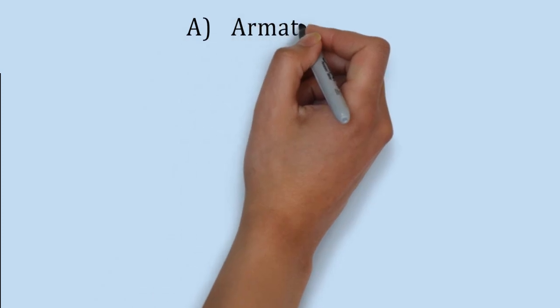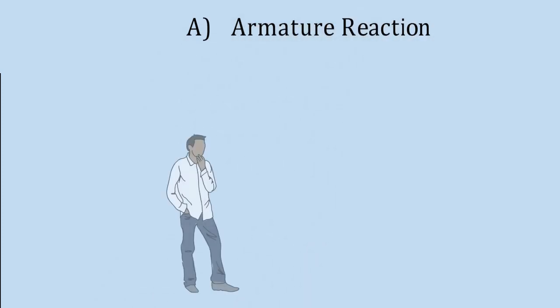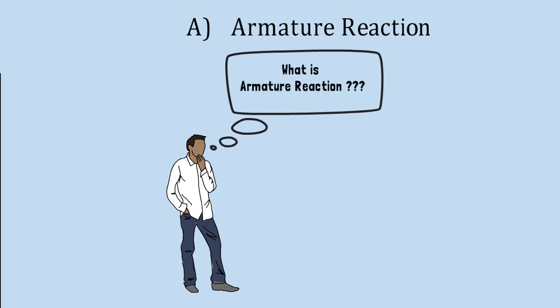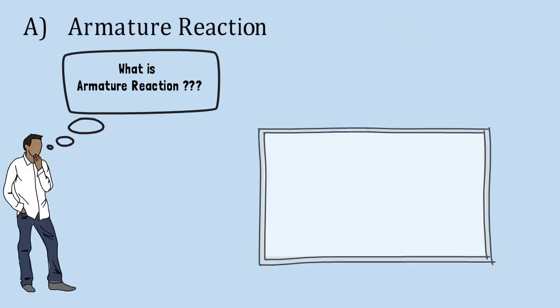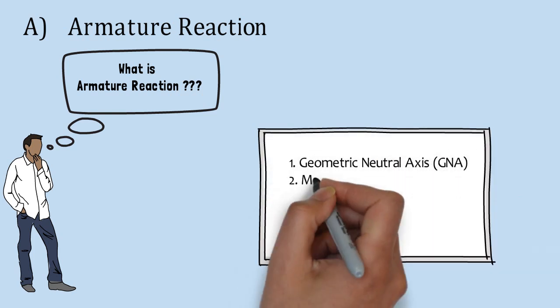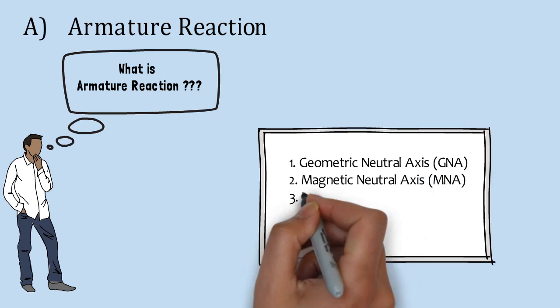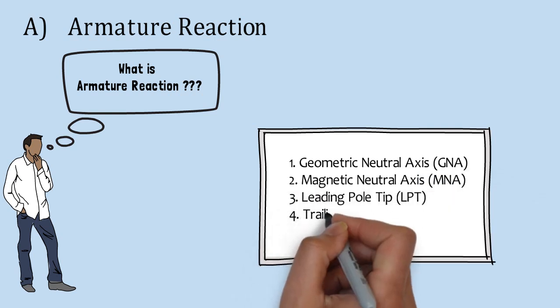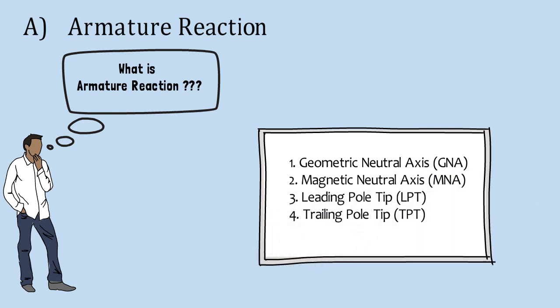In this phase of the video, we will see what armature reaction in DC machine is. Before going further, we should learn about terms related to armature reaction, and those are geometric neutral axis, magnetic neutral axis, leading pole tips, and trailing pole tips.